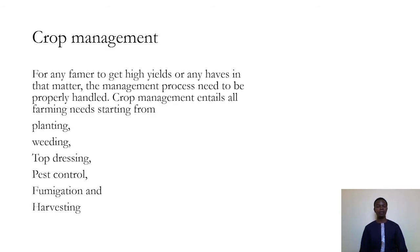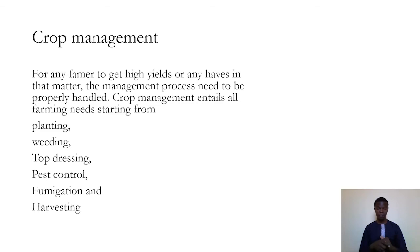When it comes to crop management, we can summarize it into a few items — and the timing is usually essential. For example: planting, the weeding process, top dressing, pest control management, fumigation, and harvesting. All these things are interrelated and usually happen within a given period of time. If we have information on the proper and right time to plant, the right time to weed, and the right time to do farm preparation, we might improve on the weeding process.